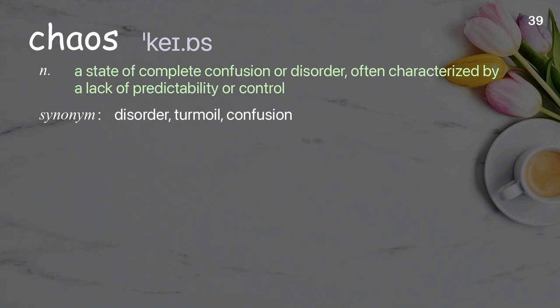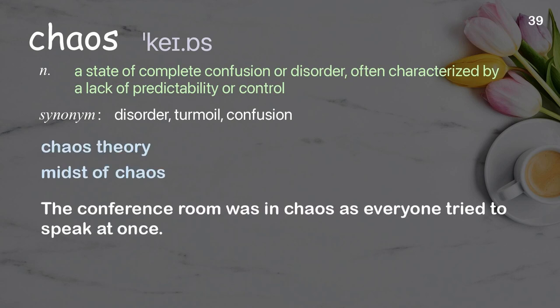Chaos: A state of complete confusion or disorder, often characterized by a lack of predictability or control. Examples: Chaos theory. Midst of chaos. The conference room was in chaos as everyone tried to speak at once.